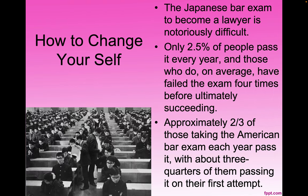The Japanese bar exam to become a lawyer is notoriously difficult — only 2.5% of the people pass each year, and those who do have, on average, failed the exam four times before ultimately succeeding. Approximately two-thirds of those taking the American bar exam each year pass it, with about three-quarters of them passing on their first attempt.